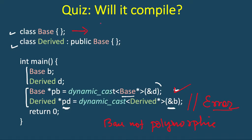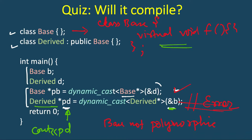If we modify the base class to include just one virtual function — say virtual void f() which is empty — then the code will compile. But what will be the output of printing pd? Since we are passing a base class object, it is not a valid object of the derived class, so the cast will fail and return a null pointer. The output will be zero.